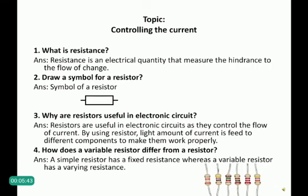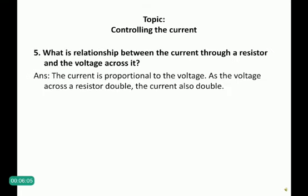Question 4: How does a variable resistor differ from a simple resistor? A simple resistor has a fixed resistance — it does not change — whereas a variable resistor has a varying resistance. Question 5: What is the relationship between the current through a resistor and the voltage across it? The current is proportional to the voltage: as the voltage across the resistor doubles, the current also doubles.